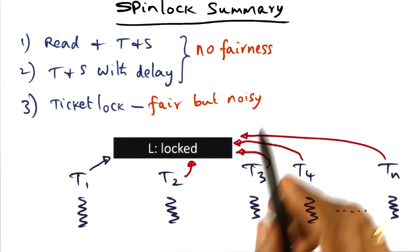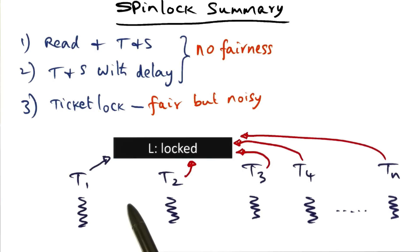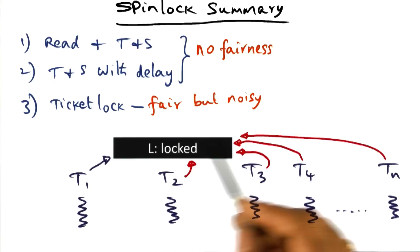If you think about it, let's say currently T1 has got this lock, and all of these guys are waiting for this lock to get released. When T1 releases the lock, exactly one of them is going to get it. Why should all of them be attempting to see if they've got the lock?